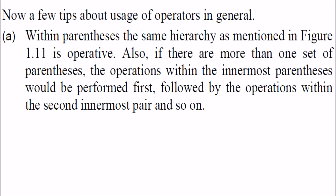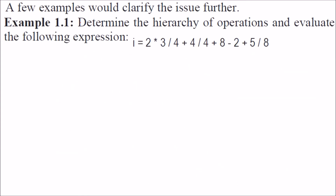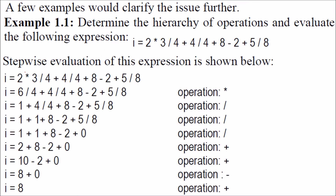Whatever you keep inside round brackets is done first, then the others follow. Example: to evaluate an expression, first do 2*3 = 6, then 6/4 = 1, then 4/4 = 1, then 5/8 = 0. After that, add 2 with 8, subtract 2, and add 8 with 0 to get 8. You find the hierarchy first, then evaluate.